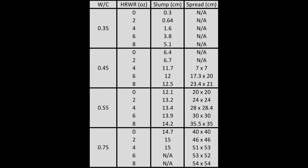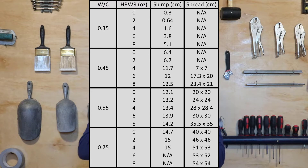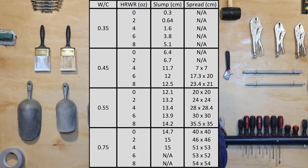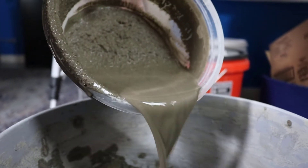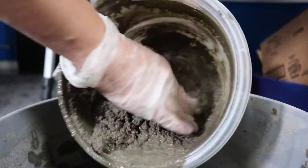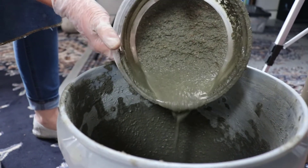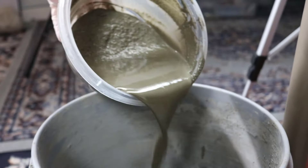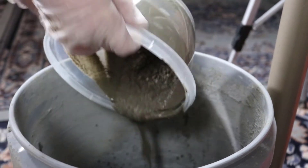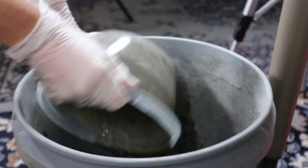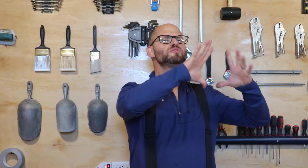Basically, what we saw is as we added more water and more high-range water reducer, we went from having a stiffer mix to a looser mix — until the point where the paste could no longer act as a stabilizing agent to hold the granular skeleton in a homogeneous, uniform suspension. What that eventually led to was a total destabilization of our mix and a pulling away of the paste from the aggregate.